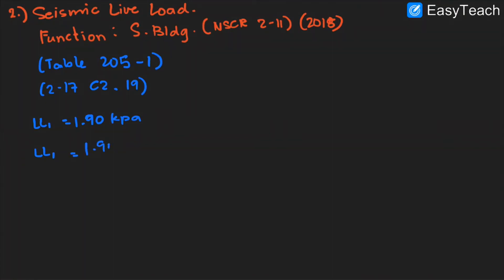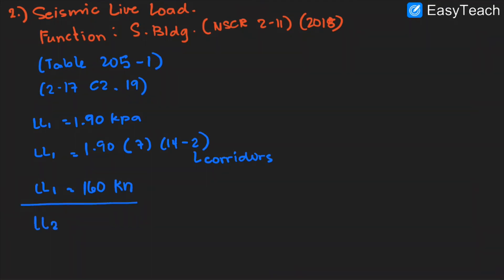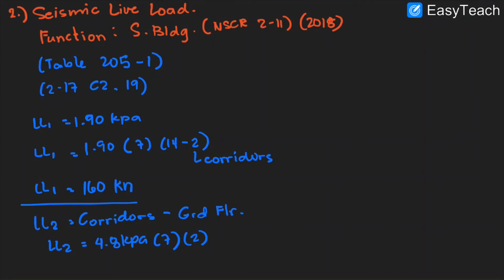For a school building classroom, the live load is 1.9 kilopascal. Total dimension is 7 by 14 minus 2 (the corridors on the sides). Live load 1 per floor section is 1.9 times 7 times (14 minus 2) = 159.6, or simply 160 kilonewton. For the corridors, Table 205-1 gives a live load of 4.8 kilopascal, times 7 times 2 corridors, equaling 68 kilonewton.